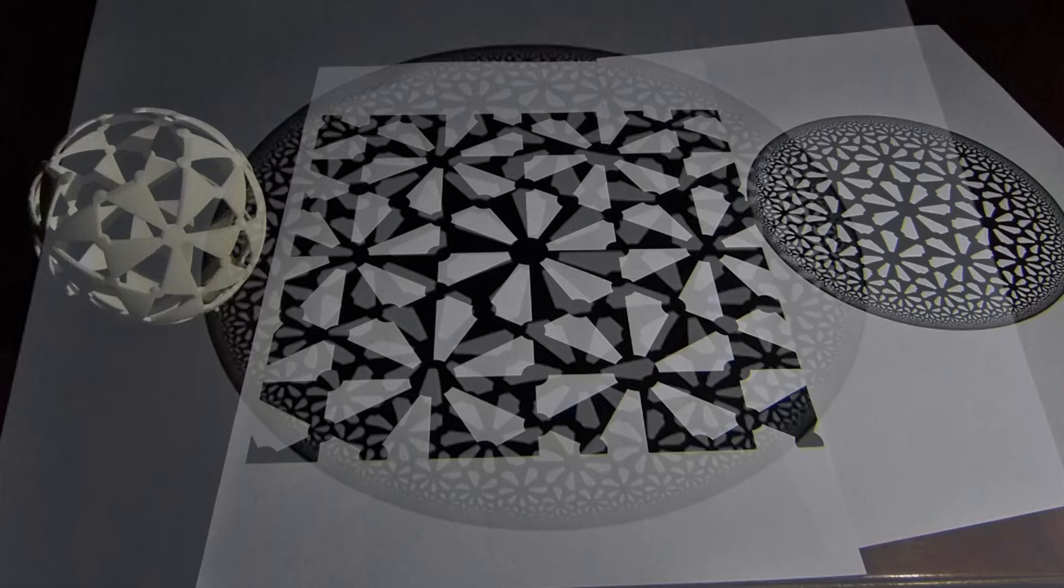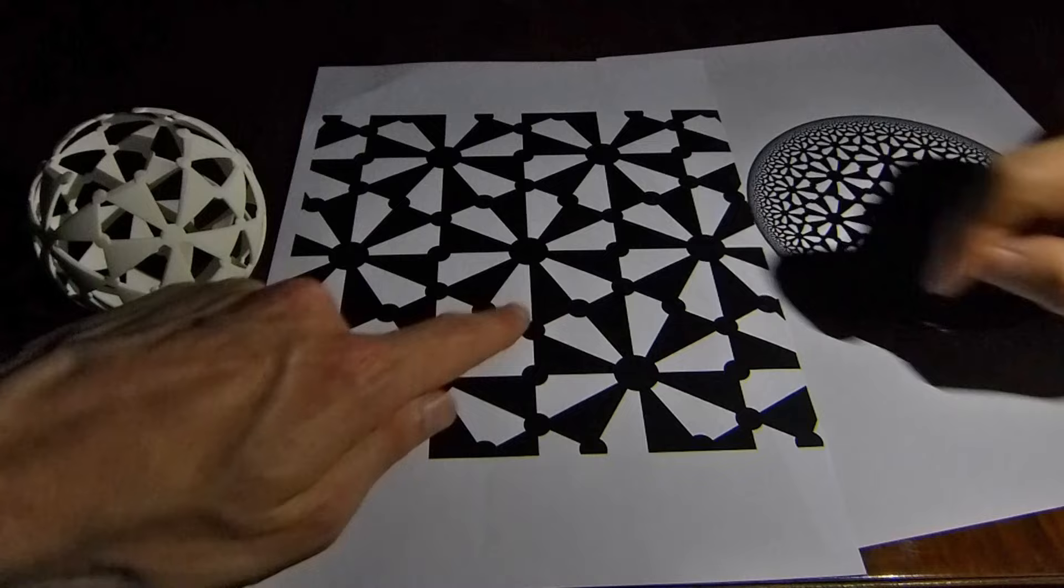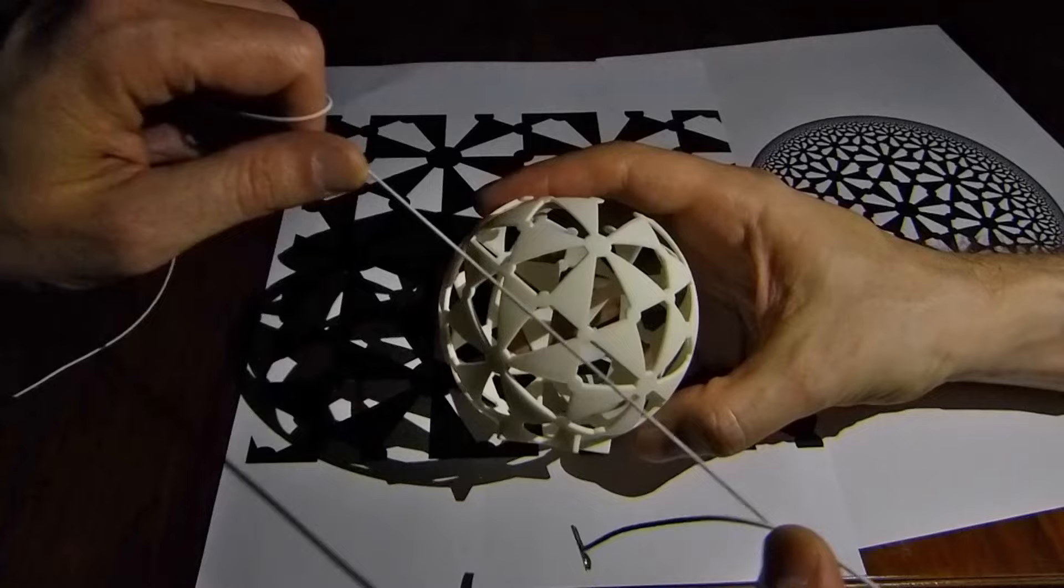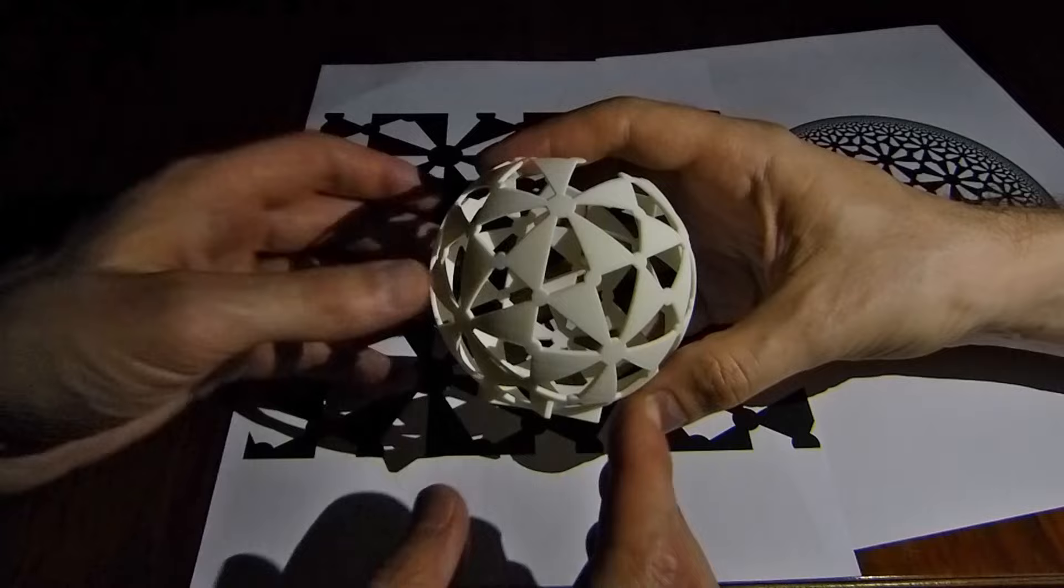Before we continue, we should really say what a triangle is. It is a figure with three sides, each of which is a geodesic. That is, a shortest path between nearby points. On the sphere, geodesics are great circles. For example, the equator is a great circle. Note that any pair of great circles meet exactly twice.